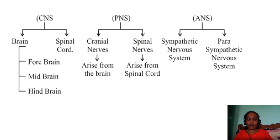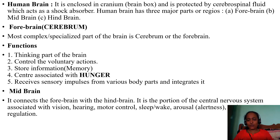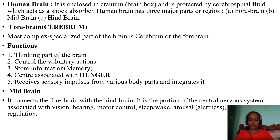Under the CNS, the brain is classified into three parts: forebrain, midbrain, and hindbrain. Cranial nerves arise from the brain; spinal nerves arise from the spinal cord. The human brain is enclosed in a bony case called the cranium or brain box. It is protected by cerebrospinal fluid, which surrounds the brain and acts as a shock absorber, preventing the brain from mechanical and chemical damage.